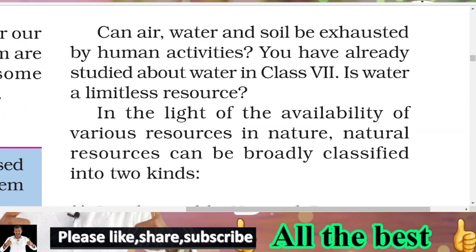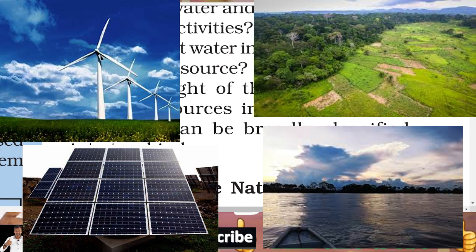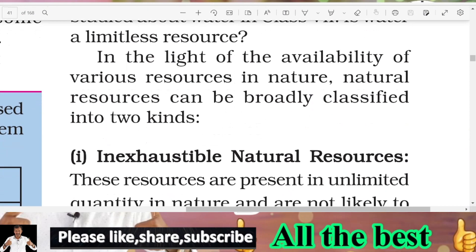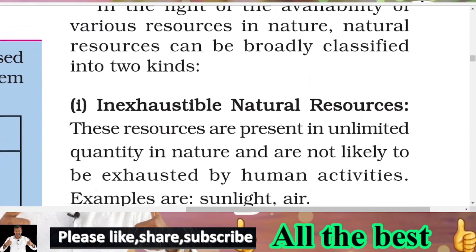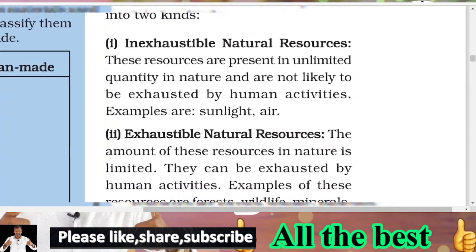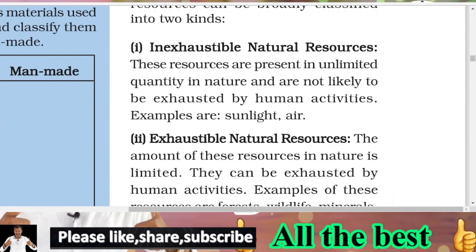Natural resources such as soil, air, water, and sunlight are available in unlimited quantities. In light of the availability of various resources, natural resources can be broadly classified into two types: inexhaustible natural resources and exhaustible natural resources.